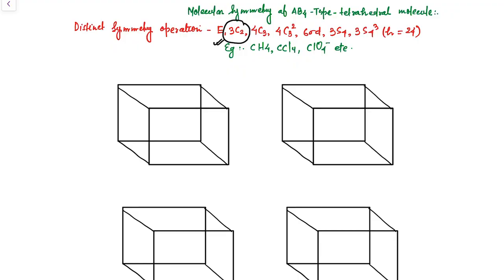As we know, we represent a tetrahedral molecule in a perfect cube by putting the B atom on alternate corners of a cube: B1, B2, B3, and B4. Now we know that all the B atoms are the same, so for our understanding we are assuming B1 = B2 = B3 = B4 = B atom. In this tetrahedral molecule, many C2 axes are visible, so we will try to understand each C2 axis one by one. From the distinct symmetry operations, it is clear that 3C2 proper axes of rotation are present in this molecule.